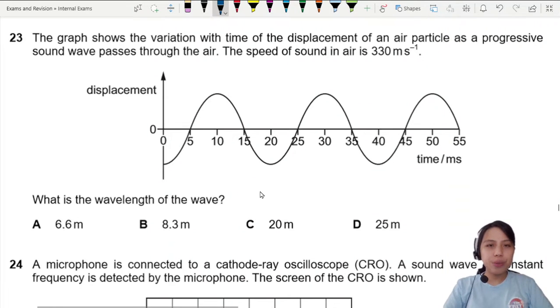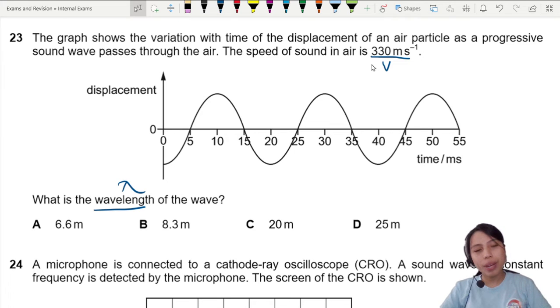The graph shows a variation with time, displacement of an air particle as a progressive wave. Speed of sound given to us. What's the wavelength of the wave?